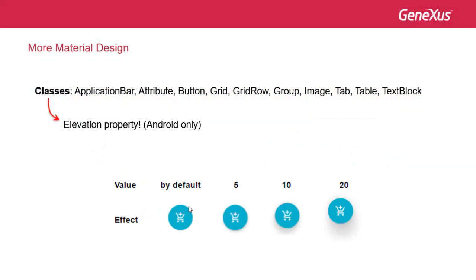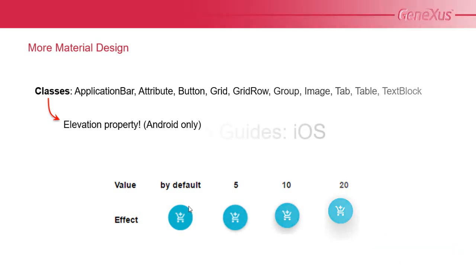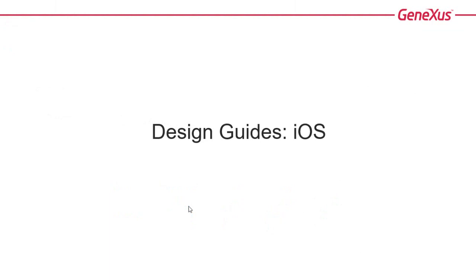We can also combine theme classes with other properties at the control level in order to achieve effects like parallax, motion in iOS, and the hero image referred to in the case of Android, among others. Let's take a look at those iOS design guidelines now.